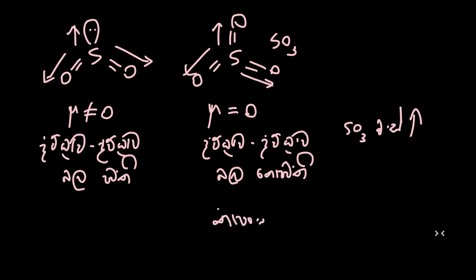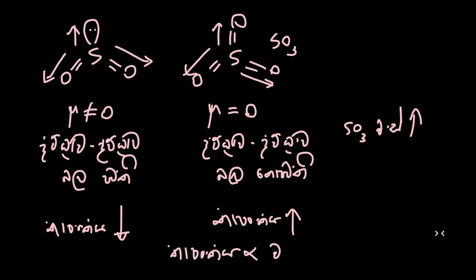SO2 is polar. SO3 is nonpolar. This is related to the symmetry of the molecule. The human system — this is equal to SO3. If SO2 and SO3 are compared using this system, SO2 is polar and SO3 is nonpolar.